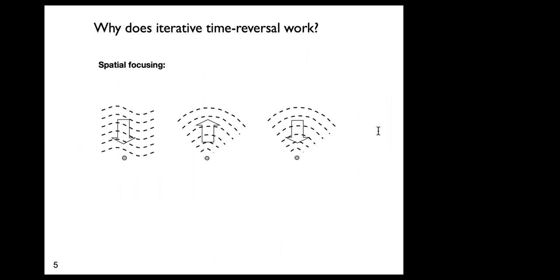The spatial part of why this works is straightforward. Suppose you have an isolated point scatterer and you send in anything — that point scatterer radiates an outgoing spherical wave. If you time reverse it, you get an incoming focusing spherical wave that focuses right on the target, and clearly that gives you more energy than what you started with.